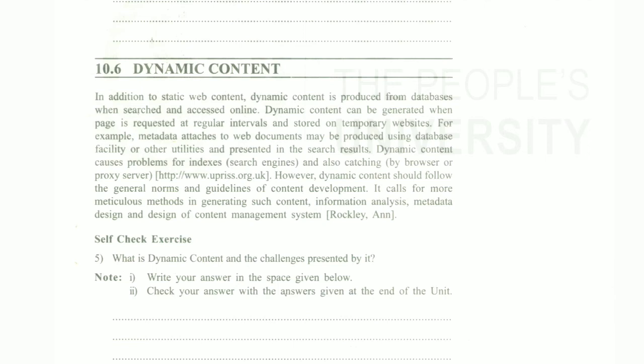The last topic in this unit is dynamic content. In addition to static web content, dynamic content is produced from a database when searched and accessed online. Dynamic content can be generated when a page is requested at regular intervals, when the page is required and stored on a temporary basis. For example, metadata attached to a web document may be produced using a database.